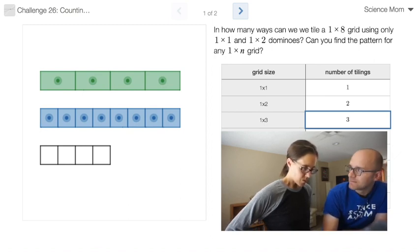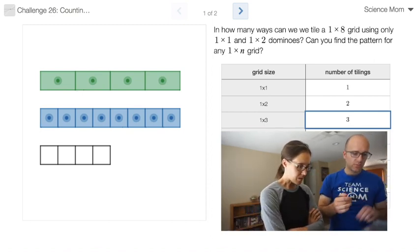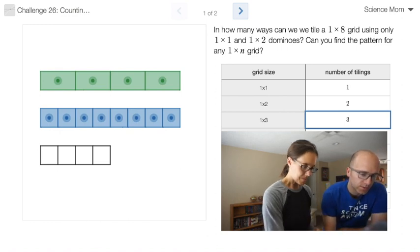But I'm curious. So you want me to answer how many ways can we tile a 1 by 8 grid? Using only these 1 by 1 dominoes, or 1 by 2 dominoes. And can I find a pattern for any 1 times n grid? I'm on it. How much time do I get?